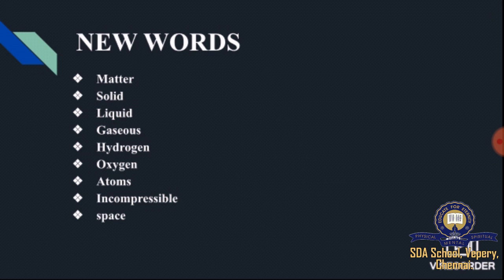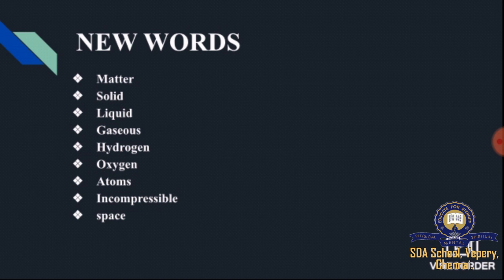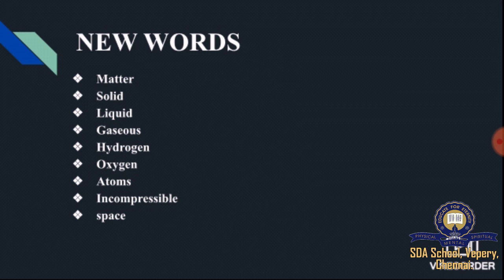The first word is Matter — M-A-T-T-E-R. Solid — S-O-L-I-D. Liquid — L-I-Q-U-I-D. Gaseous — G-A-S-E-O-U-S. Hydrogen — H-Y-D-R-O-G-E-N. Oxygen — O-X-Y-G-E-N. Atoms — A-T-O-M-S. Incompressible — I-N-C-O-M-P-R-E-S-S-I-B-L-E. Space — S-P-A-C-E.